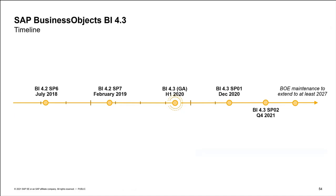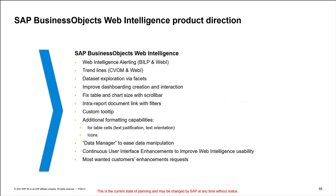BI 4.3 Service Pack 2 is planned for December 2021, with BI 4.3 supported at least until 2027 — and we plan to extend that. After SP2, there will be SP3 and SP4, with strong innovations including highlighting in WebI, trend lines, data storytelling inside the new data manager, and more to be shared later. Thank you for your attention — the slides will be shared with everyone. If you have questions, don't hesitate to contact me.